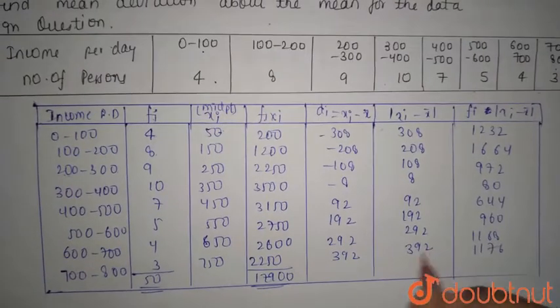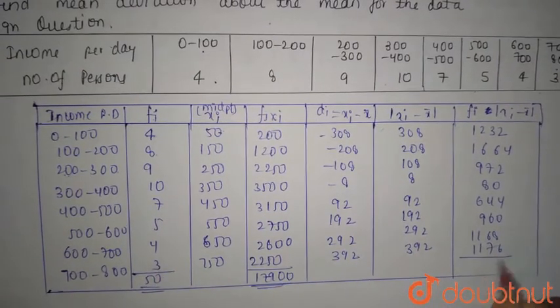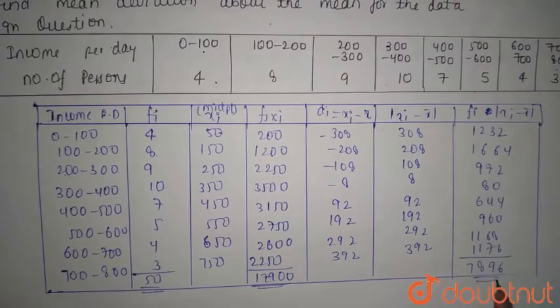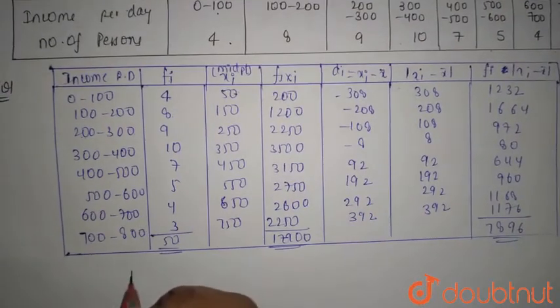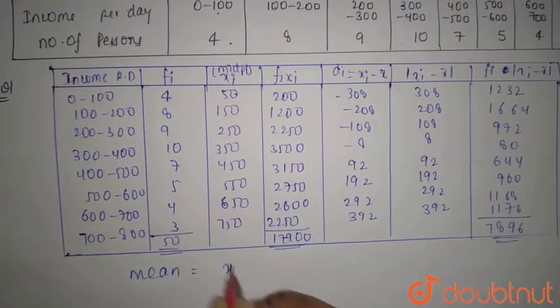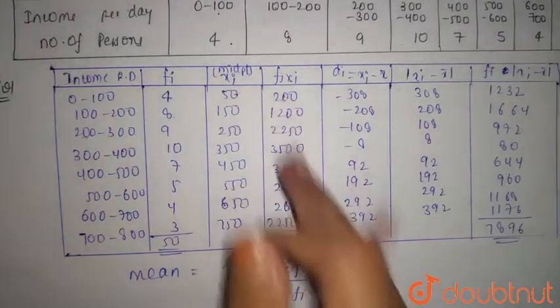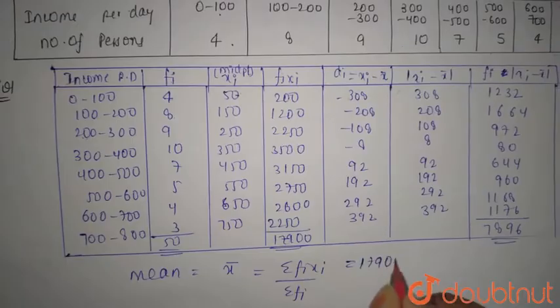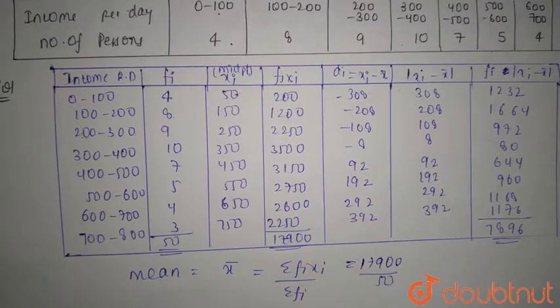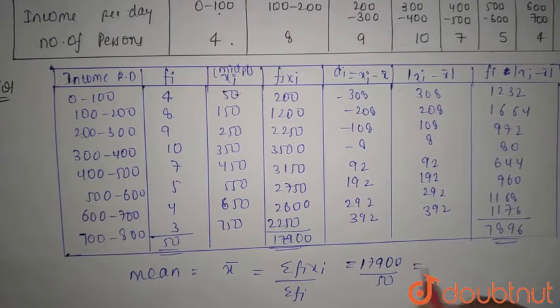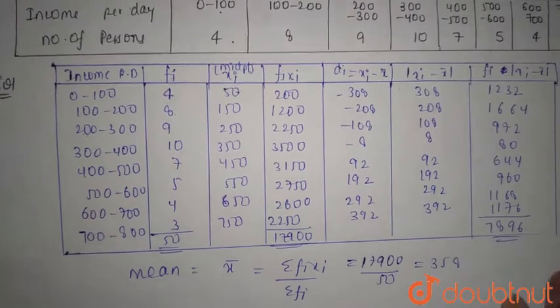The total is 7896. The mean x̄ is summation of fi xi divided by summation of fi. fi xi summation is 17900 and summation of fi is 50, so the mean is 358.